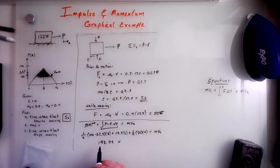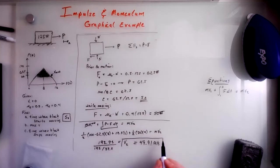So we can divide this by M. What is that? That is 125 divided by gravity, which is 32.2. And that is V2. And when you run that through the calculator, that gives you that V2 is 49.91. And that is in feet per second.